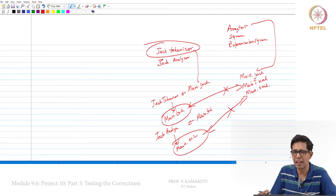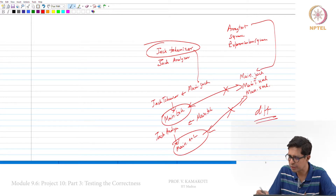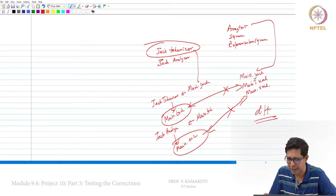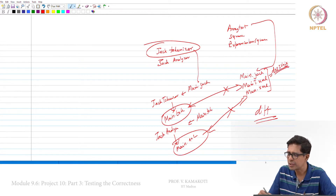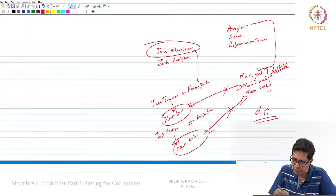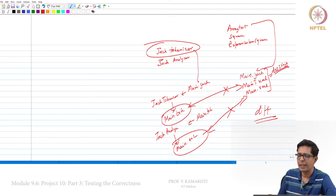If you are using Linux, you can use the diff command to compare files. On Windows you can find a similar command. Note that all these files are DOS files, so use the dos2unix utility in Linux to convert them and remove DOS characters so that when you compare them they match.